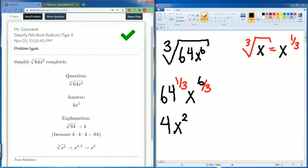There you go. All right, that is your simplifying nth root radical type 1.